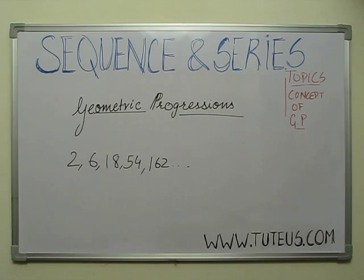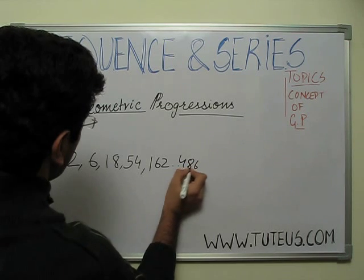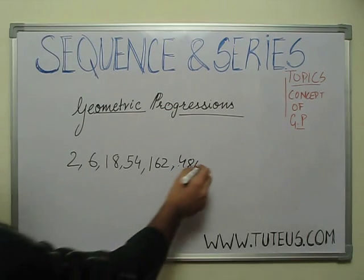So, for the next term, we can do 162 into 3, which means 486 should be here. Right? And so on, this series is going.